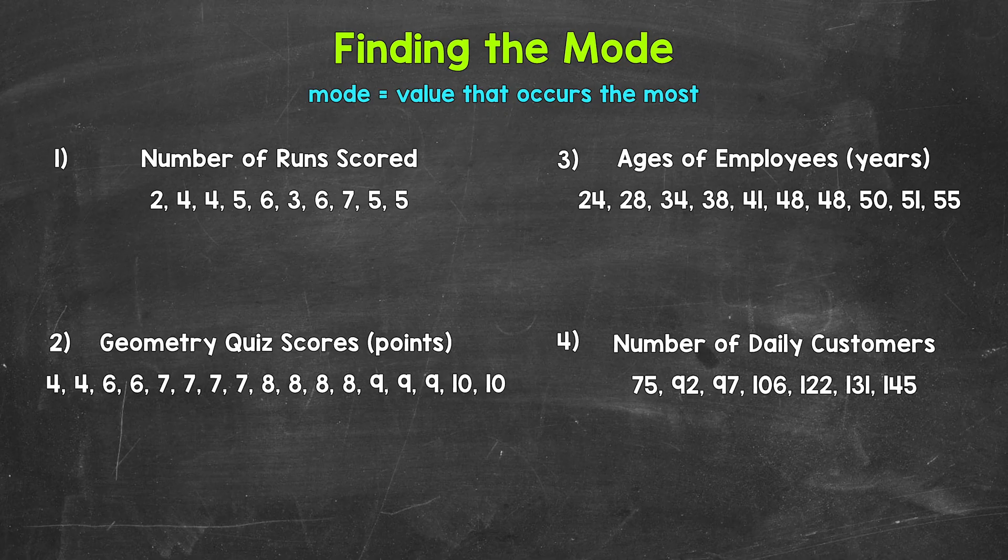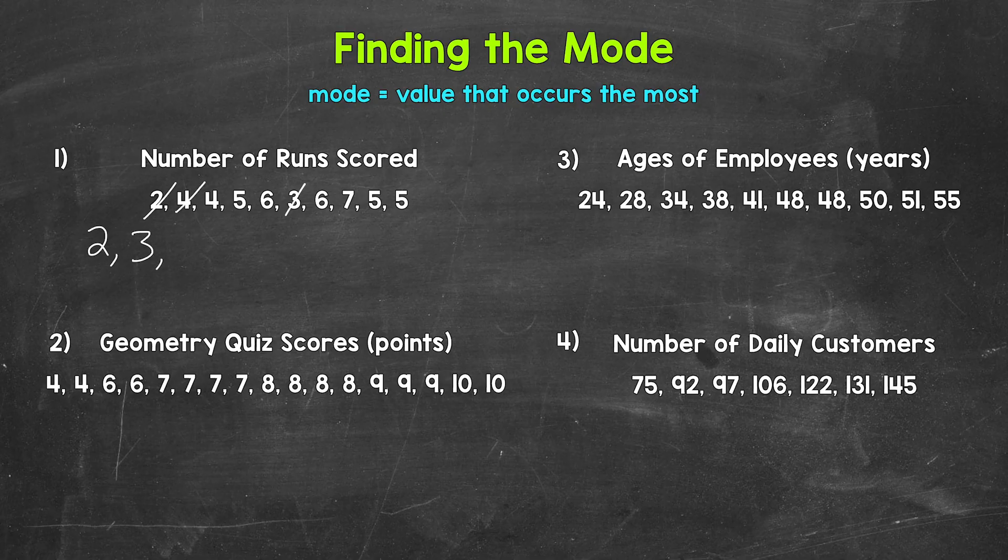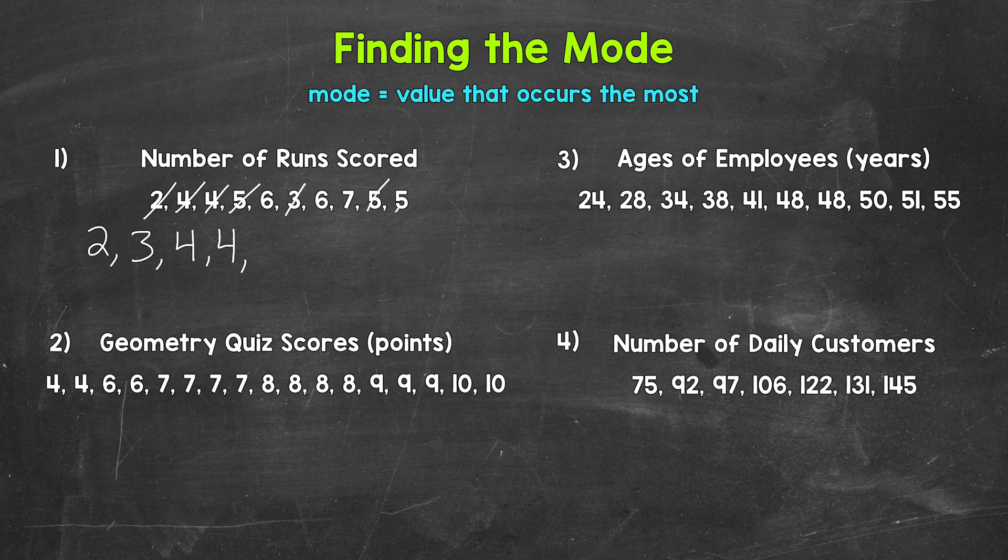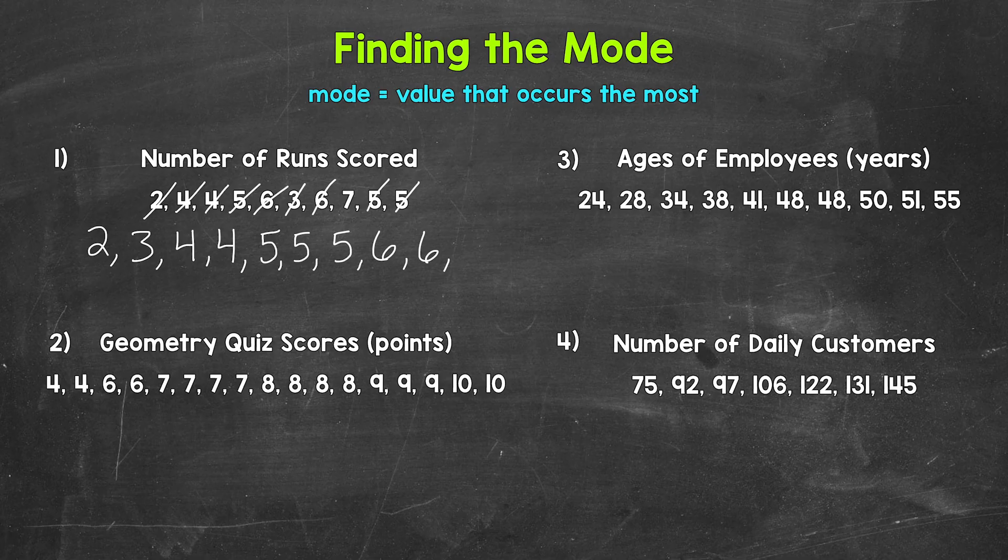The lowest number of runs is 2. So we have 2, then we have 3, then we have two 4s, then we have three 5s, then two 6s, and then we end with 7.